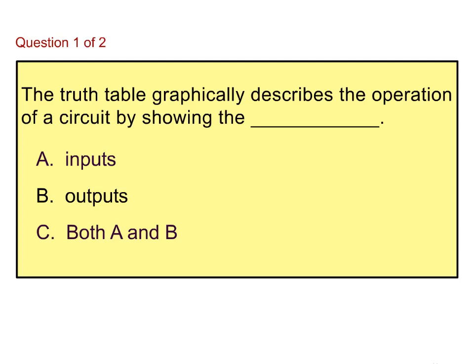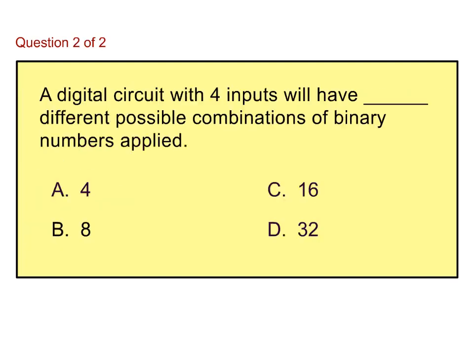The truth table graphically describes the operation of a circuit by showing the inputs and outputs, answer C. A digital circuit with four inputs will have 16 different possible combinations of binary numbers applied. This was answer C.